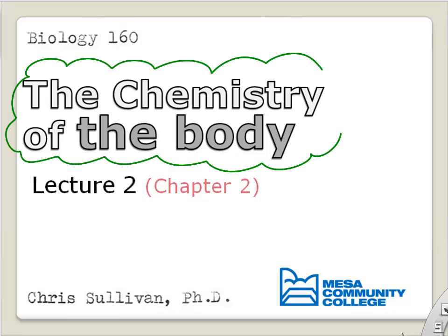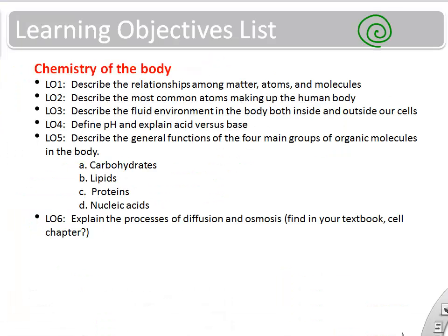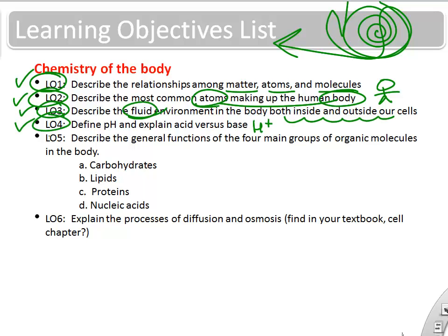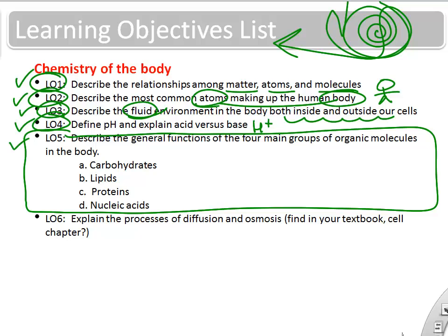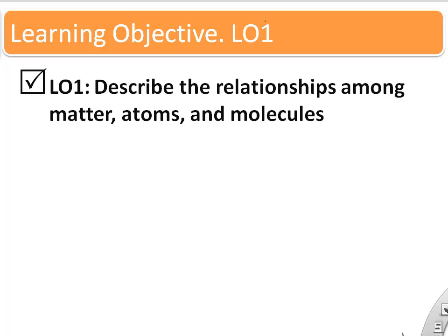This video covers the chemistry of the human body — lecture video two. The learning objectives include atoms and molecules, fluid chemistry, pH, and the main organic or biological molecules in the body like carbohydrates, lipids, proteins, and nucleic acids. We'll finish on the properties of diffusion and osmosis.